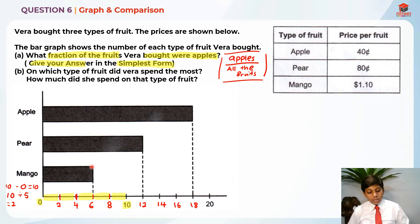After this, we can actually match these up to the apple. Let's match it up to the apple first. The apple is eighteen, right? And then, the pear is twelve, and the mango is six.